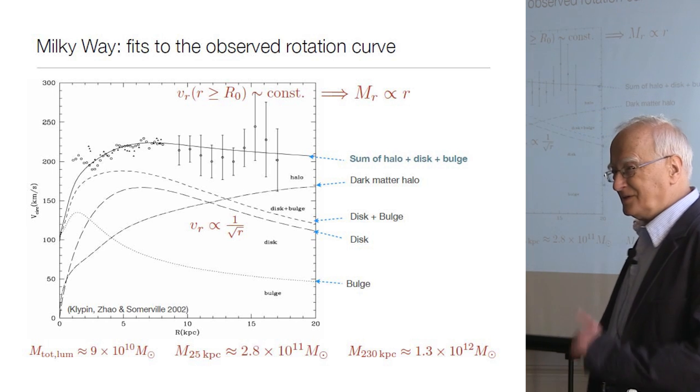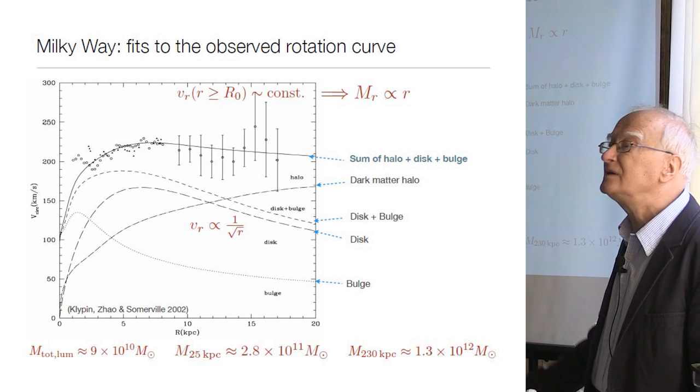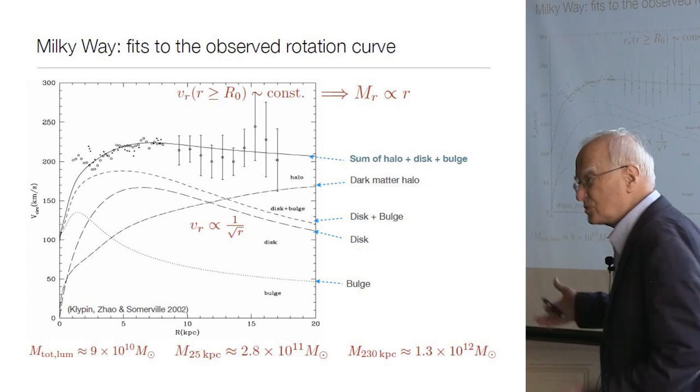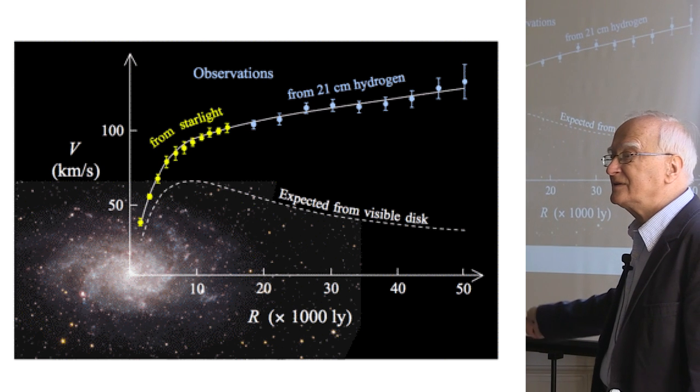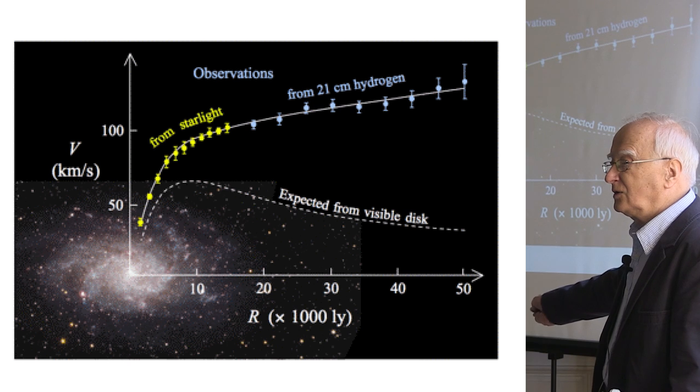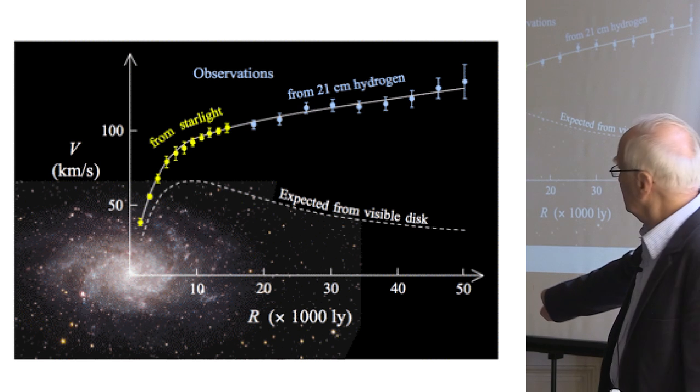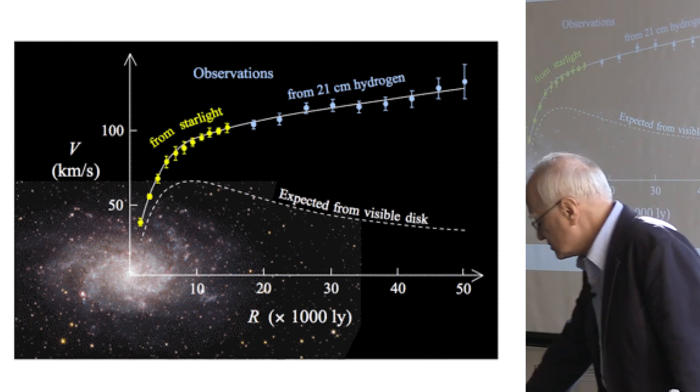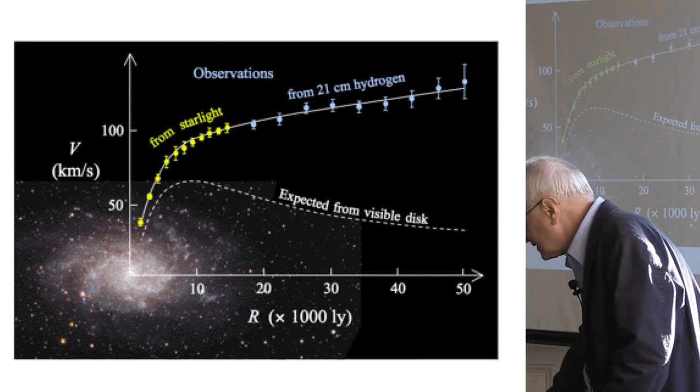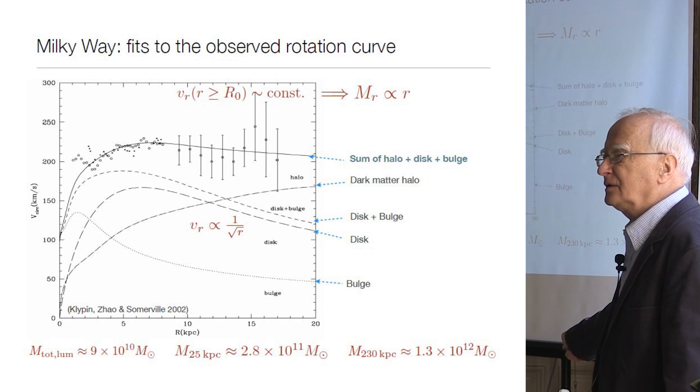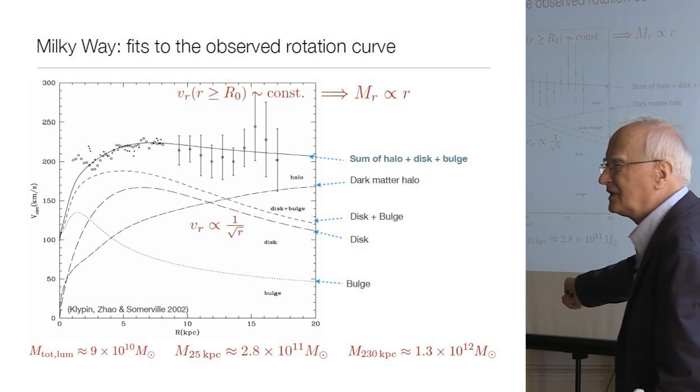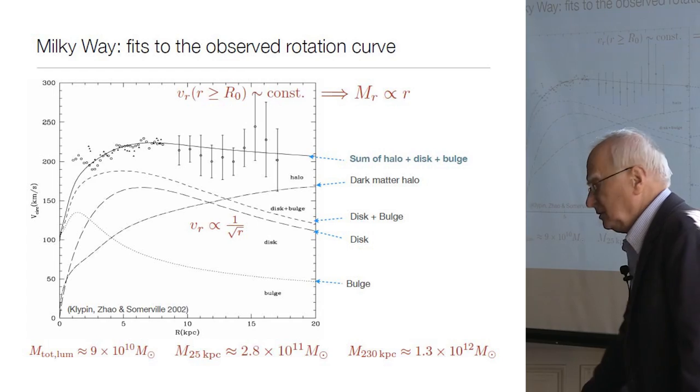There is another reason why dark matter is needed for the existence of galaxies. If you ask the question is this system dynamically stable, it turns out that this disk-like distribution of matter on a time scale much shorter than the age of the universe will collapse. If you add this additional dark matter halo, it stabilizes the disk of the galaxy.